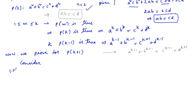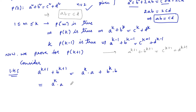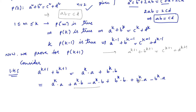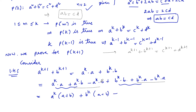Consider the LHS: aᵏ⁺¹ + bᵏ⁺¹ = aᵏ·a + bᵏ·b. To utilize the given equations, add and subtract terms: aᵏ·a + aᵏ·b − aᵏ·b + bᵏ·b + bᵏ·a − bᵏ·a. From the first two terms take aᵏ common to get aᵏ(a+b), and from the next two take bᵏ common to get bᵏ(a+b).